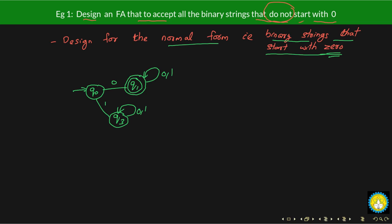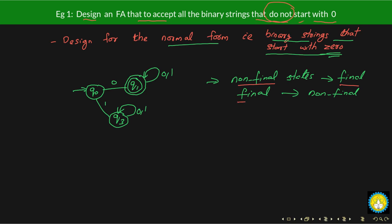Now let's look at how we can convert it into its complement form. The procedure for converting this DFA into its complement form is as follows: all transitions remain the same, and what we do is convert all the non-final states into final states, and all the final states into non-final states. That's all you need to do — the transitions remain unchanged.